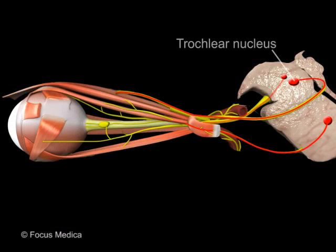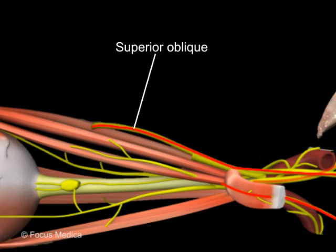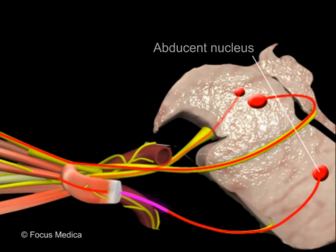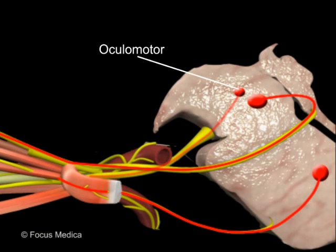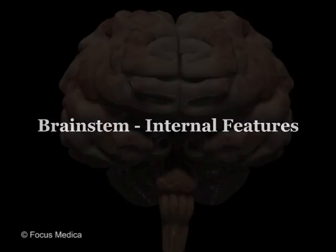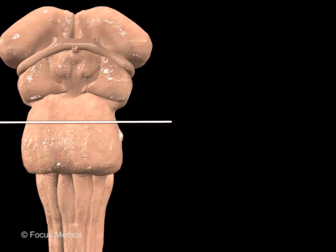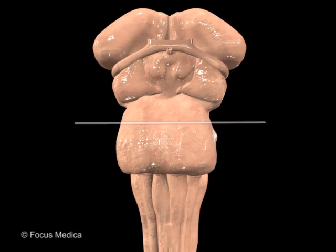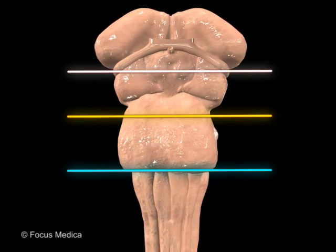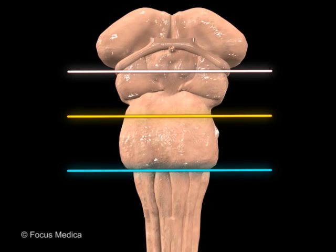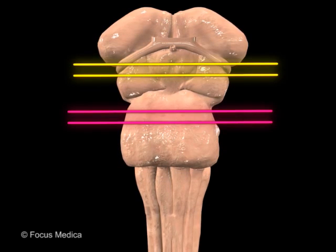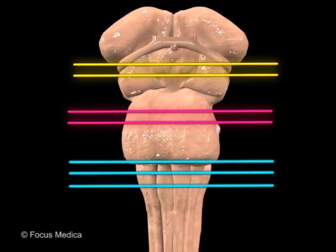The trochlear supplies the superior oblique. The abducent nerve supplies the lateral rectus, and the oculomotor supplies the rest of the muscles. The interior of the brainstem is best studied using cross sections. The horizontal sections at various levels are marked and involve seven standard levels: two each for the midbrain and pons, and three for the medulla.